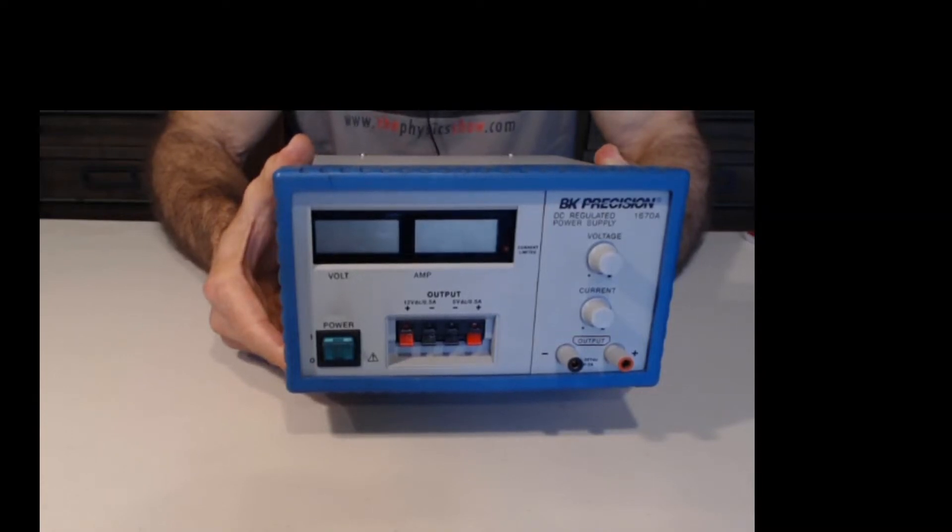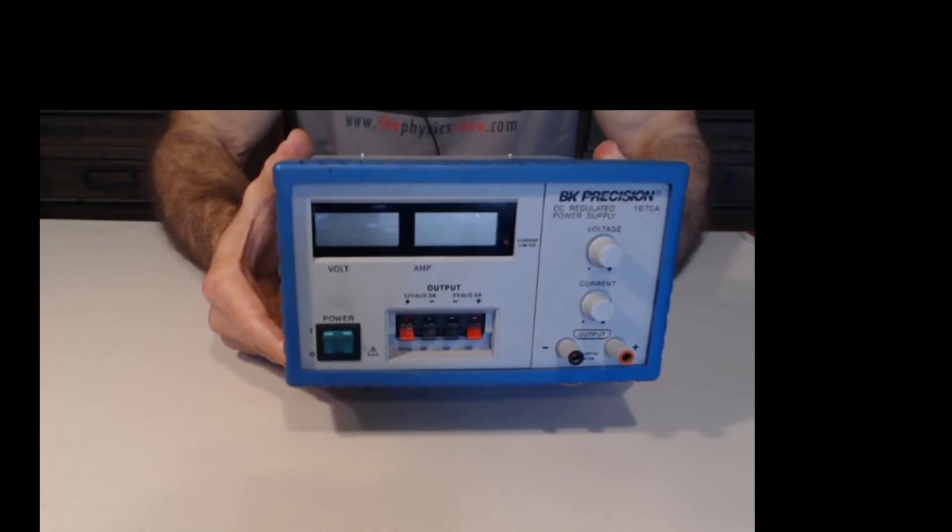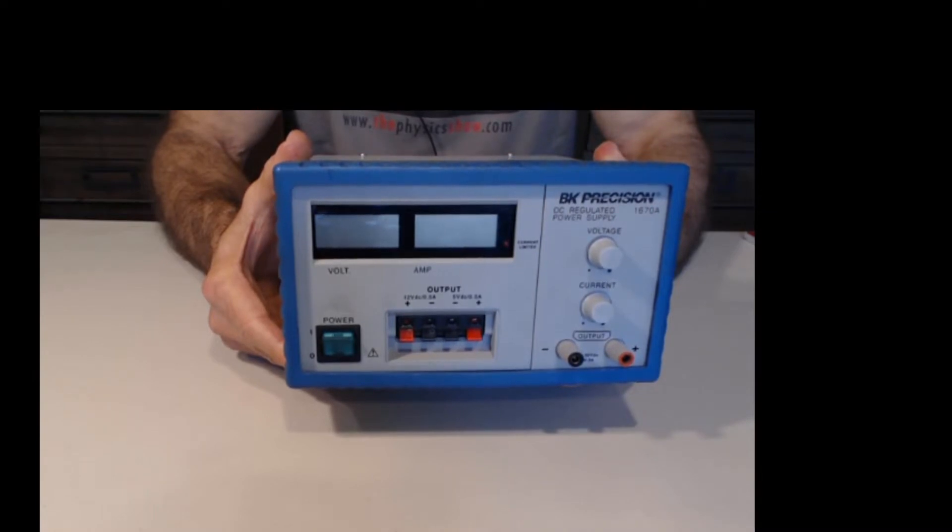This is our DC power supply. It provides a direct current power source, which is like a battery. That means the voltage is constant in time.